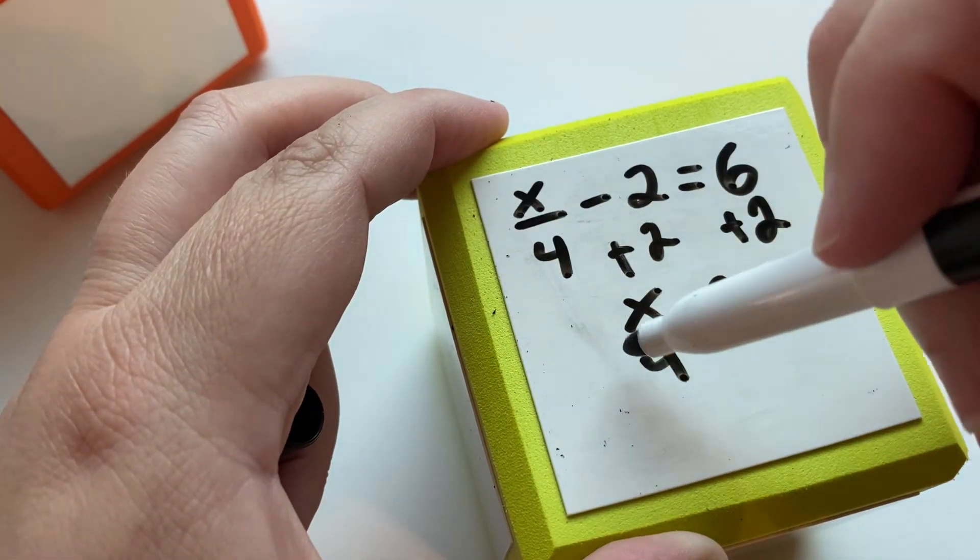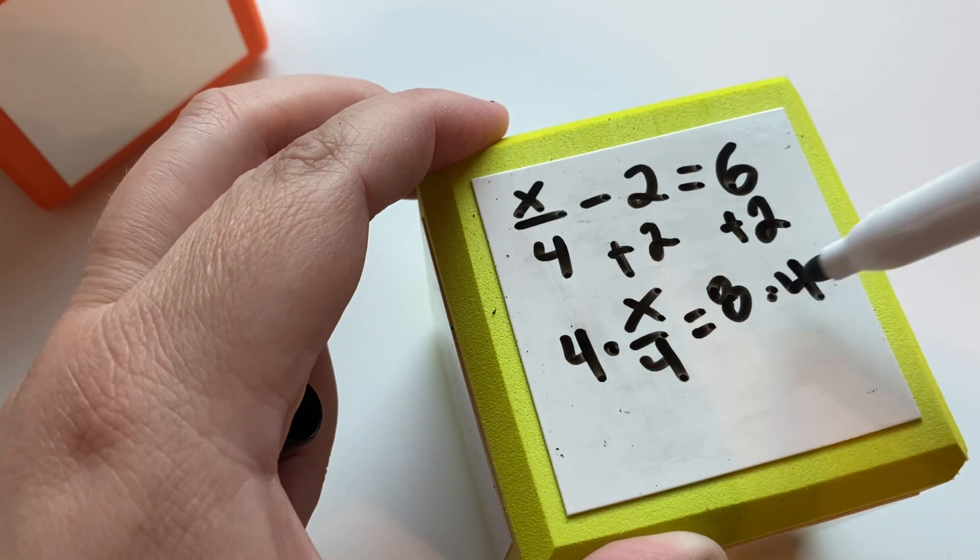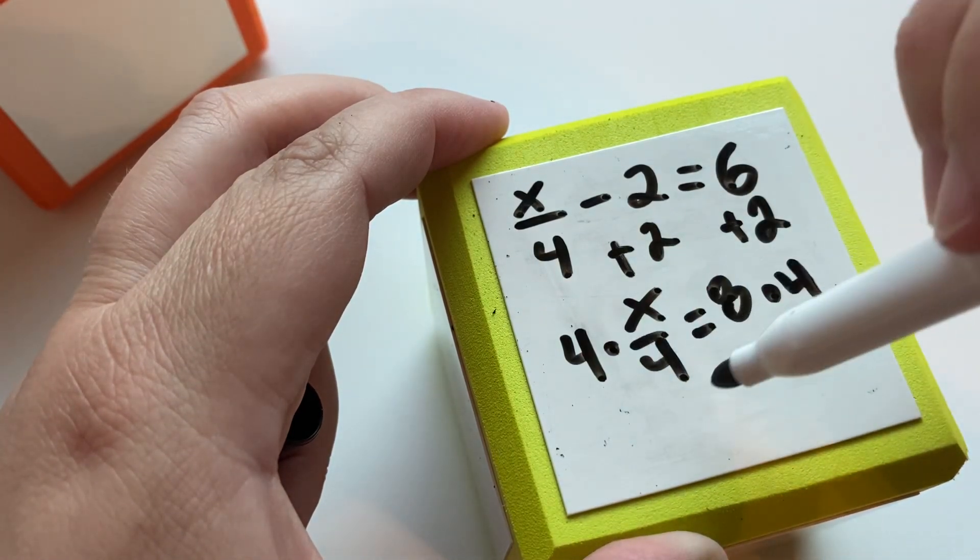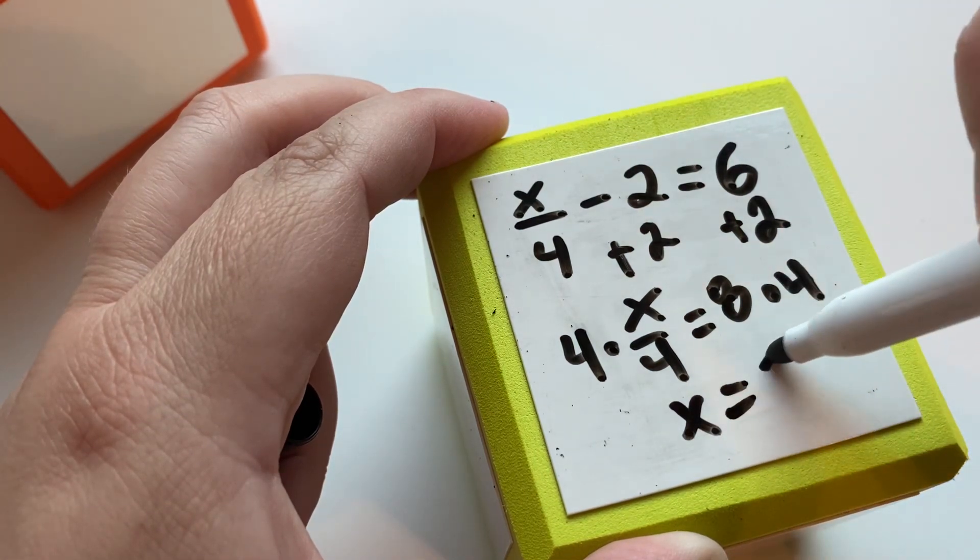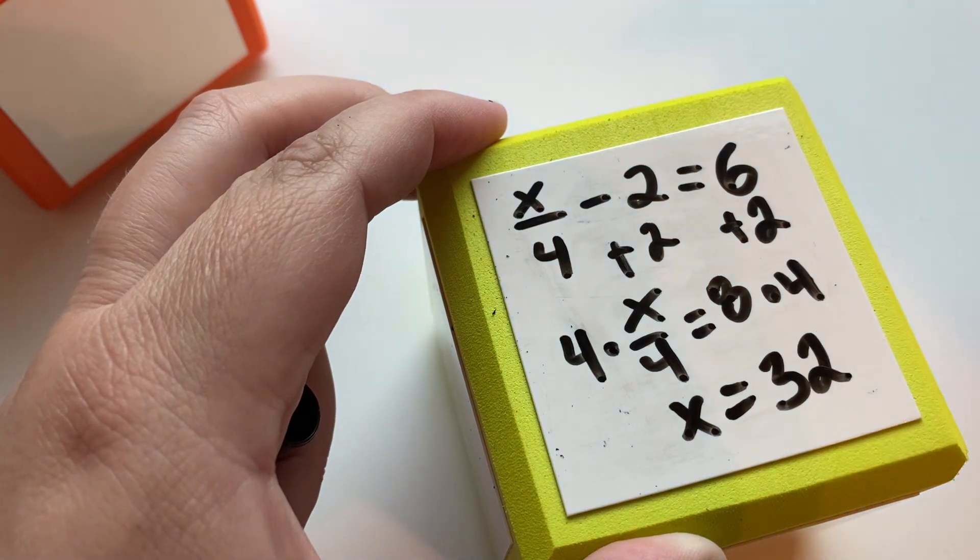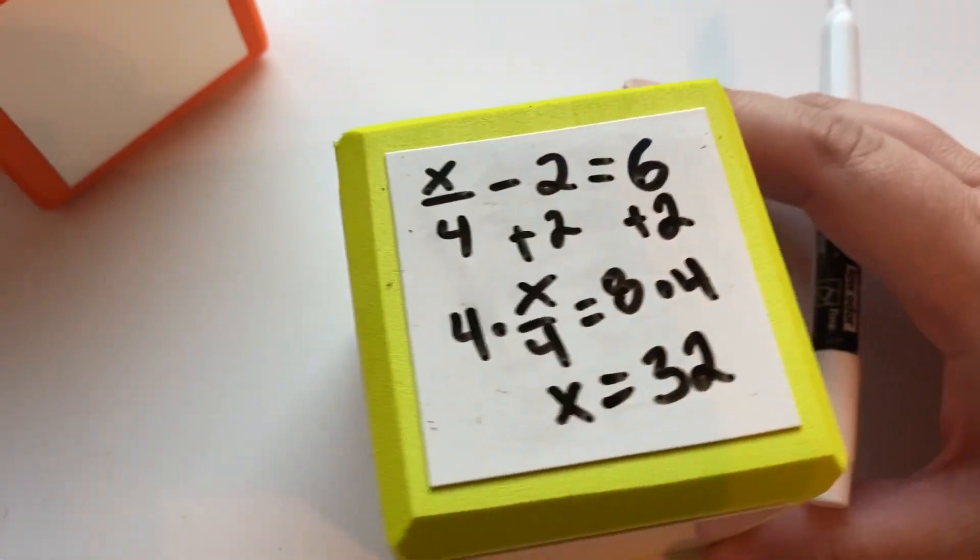And then instead of dividing by 4, we're going to multiply by 4. That's how we get rid of the 4 on this side, and we get x by itself. And then x times 4 equals 32. I'll let you look at that again for a second.